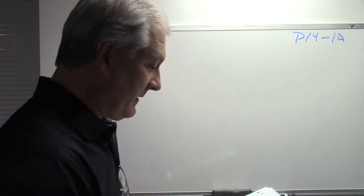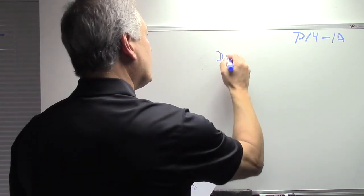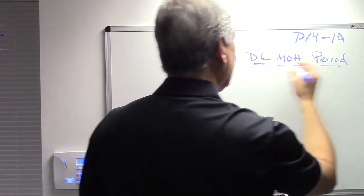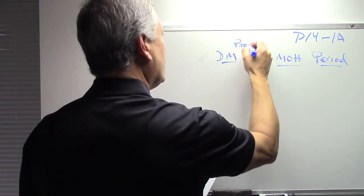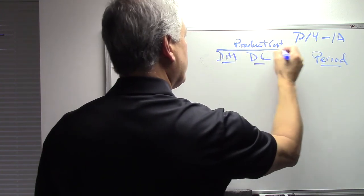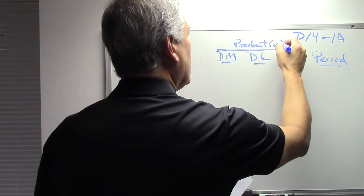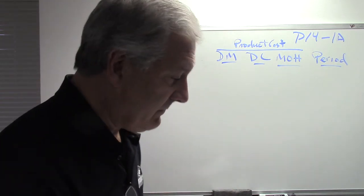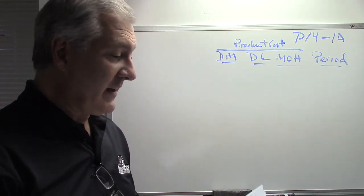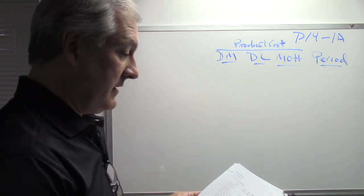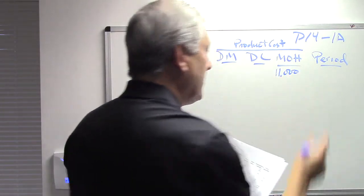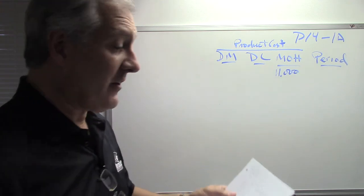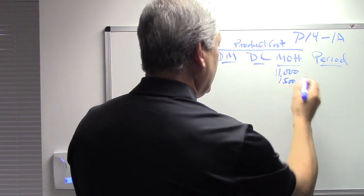Ono's monthly manufacturing costs and other expense data need to be classified as direct materials, direct labor, manufacturing overhead, or period costs. The solution is the published solution on Sakai, but I want to walk through it. Rent on factory — $11,000 — is manufacturing overhead, an other factory cost. Insurance on factory — $1,500 — is another other factory cost, manufacturing overhead.